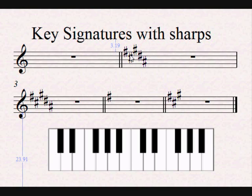So whatever it is, it is written in B major or the minor relative of B major. The minor relative of B major — if we move backwards 1, 2, 3, 4 — that would be G sharp minor. So this one here is either written in B major or G sharp minor.